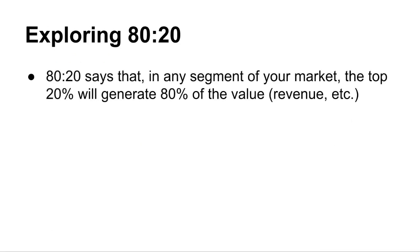The 80-20 principle says that in any segment of your market, the top 20% is basically worth 80% of the value of that whole segment — they will generate 80% of the value. This tends to hold true. If you read Perry Marshall's 80-20 Sales and Marketing book, he comes up with a lot of examples. Out of any group of donors — whether for a church or a political party — the top 20% will generally donate 80% of all the cash. Out of a group of volunteers, the most active 20% will do 80% of the work.